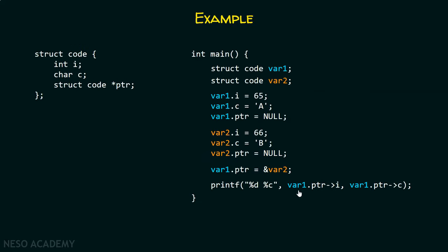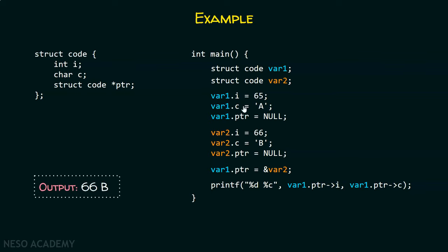In the printf function, with the help of var1, I am trying to access the members of var2. var1.ptr contains the address of var2, so I am essentially calling var2 and accessing its member i and member c using the arrow operator, since ptr is a pointer. The output of this program is 66 and 'b'. With the first variable, I can access the contents of the second variable as well — there is no problem.